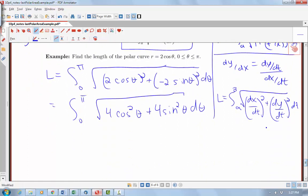So we see if we can factor out a 4, this would be 4 times cosine squared plus sine squared, which we know is equal to 1. So this simplifies to just an integral of 2. So we'd have 2 theta evaluated from 0 to pi, or 2 pi for our arc length.